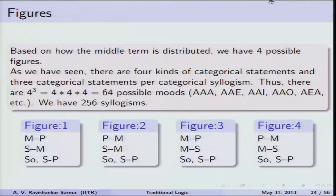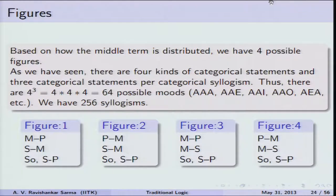Based on how the middle term is distributed across the premises, Aristotle classified syllogisms into four possible figures. The middle term occurs twice in the premises and never in the conclusion — if it appears in the conclusion, the argument is not a valid syllogism at all.